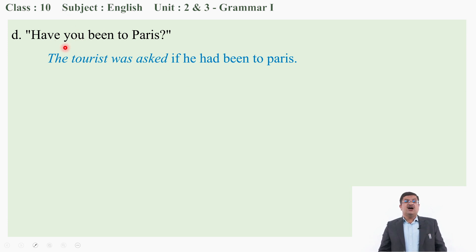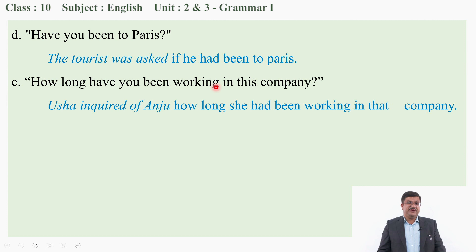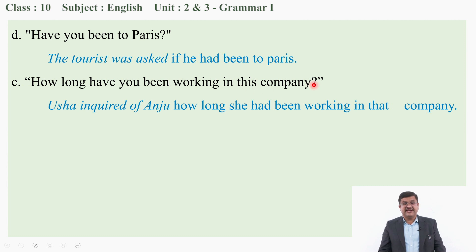'You' changes according to the object of the reporting clause — the tourist was asked, so 'you' changes to 'he'. 'How long have you been working in this company?' — This is WH interrogative. It changes to: Usai inquired of Anju how long she had been working in that company. There are certain time adverbials that change accordingly — 'this' changes to 'that'. I will show you the chart later.